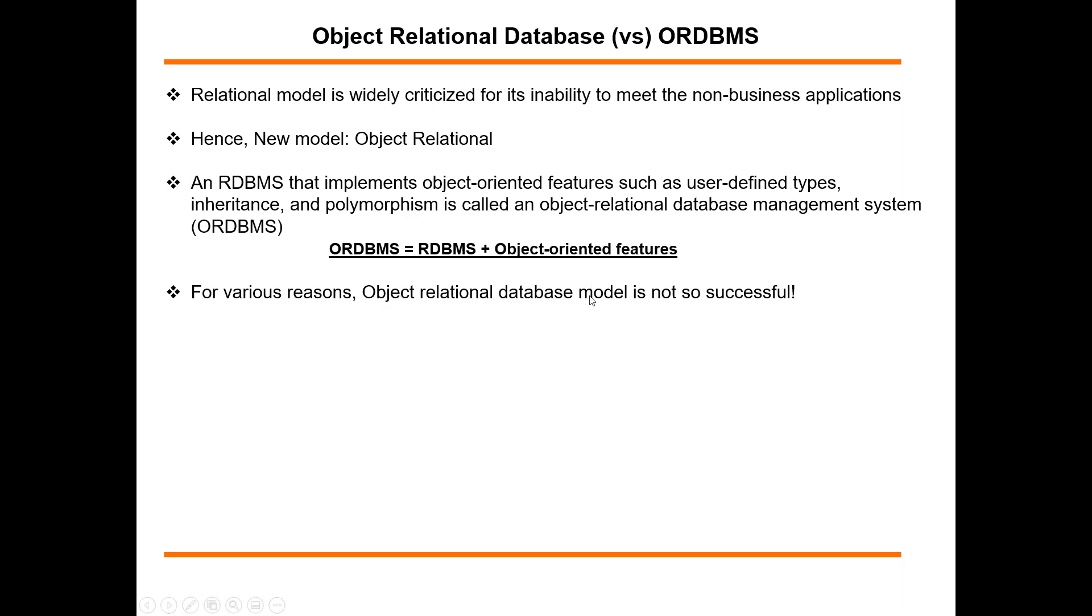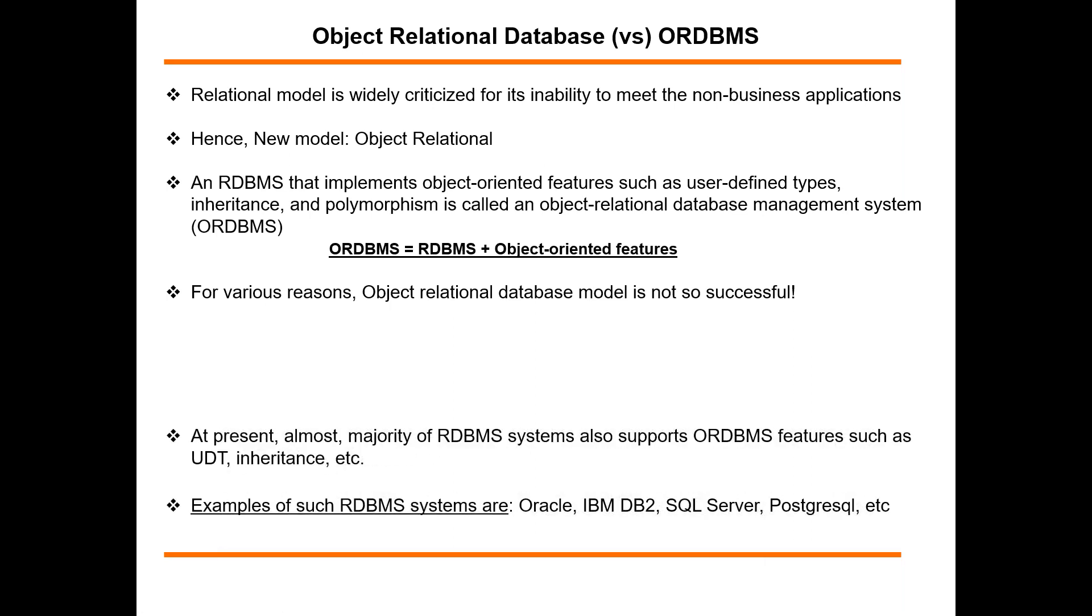For various reasons, however, this object relational database model is not so successful. Taking that as an opportunity, these RDBMS systems themselves started including these various object-oriented features as part of RDBMS itself. Why should we need new ORDBMS when I can include the same features as part of RDBMS?